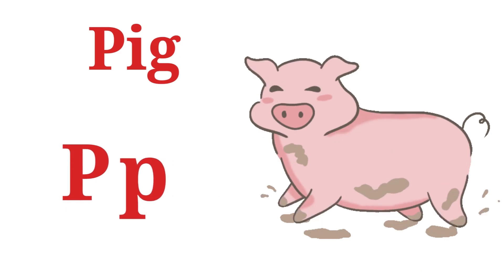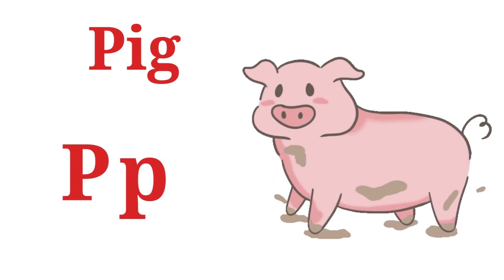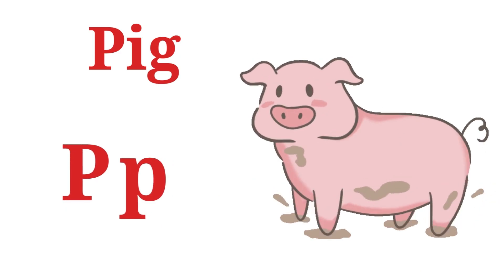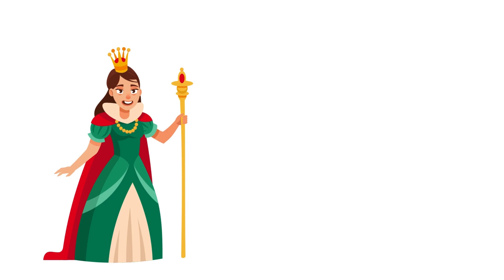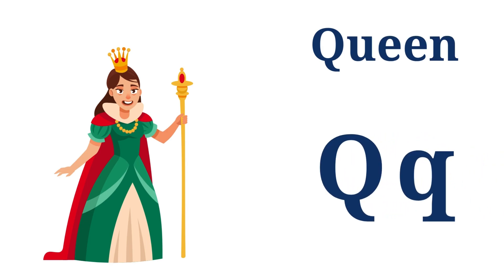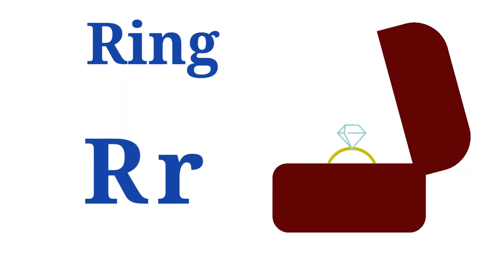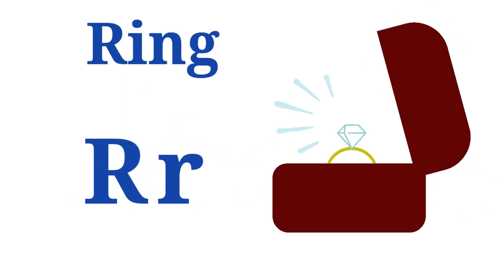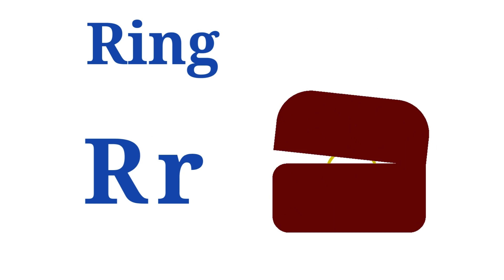P for Pig — P-P-Pick. Q for Queen — Q-Q-Q-Queen. R for Ring — R-R-R-Ring.